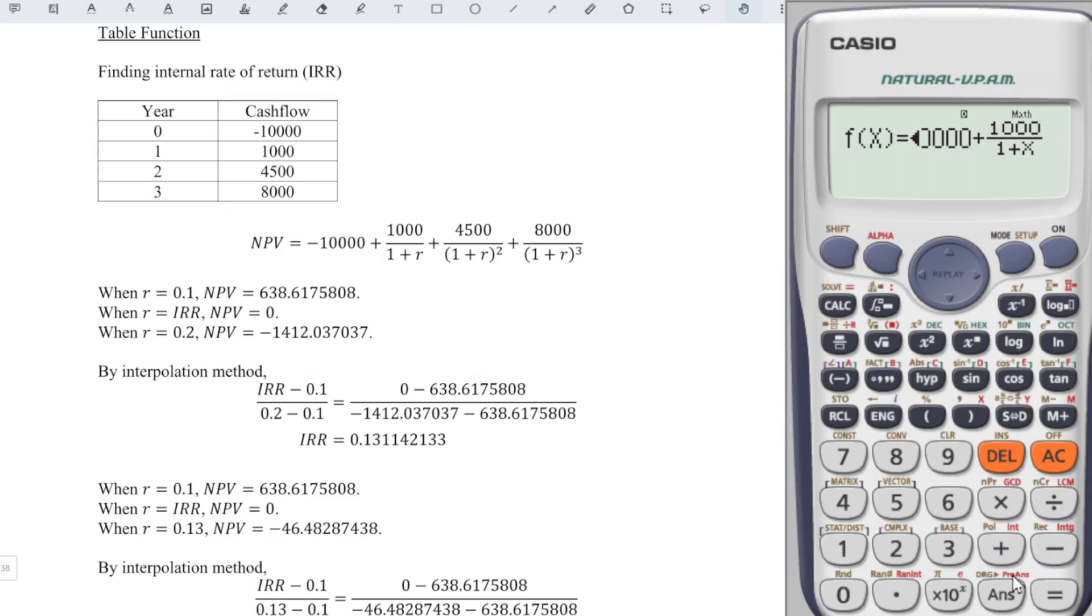Plus 4,500 over bracket 1 plus alphabet X close bracket square, plus 8,000 over bracket 1 plus alphabet X close bracket cubed.